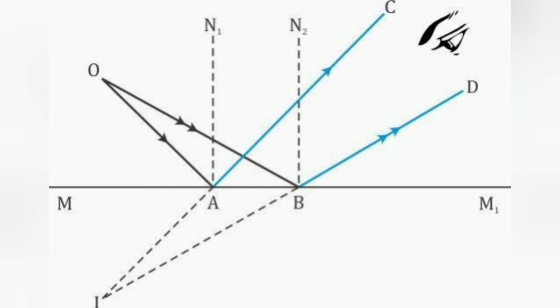Formation of image by a plane mirror. First one, image of a point object. Here, this diagram shows how a plane mirror forms the image of a point object. A point object O is placed in front of a plane mirror MM1. From the object O, rays of light travel in all directions.